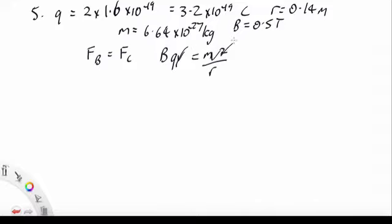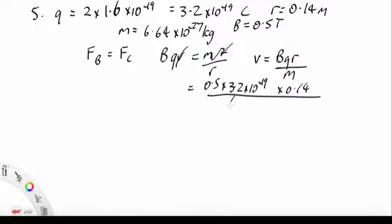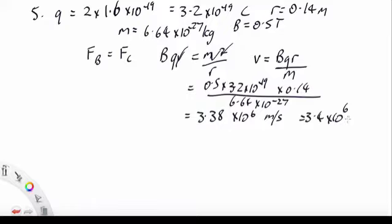One of the V's cancels out. V equals BQR over M equals 0.5 by 3.2 by 10 to the minus 19 by 0.14 over 6.64 by 10 to the minus 27. And that comes to be 3.38 by 10 to the 6 meters per second, so 3.4 really by 10 to the 6.